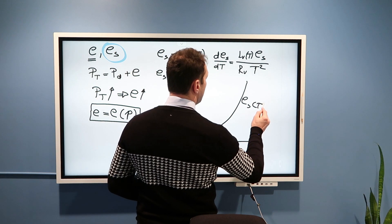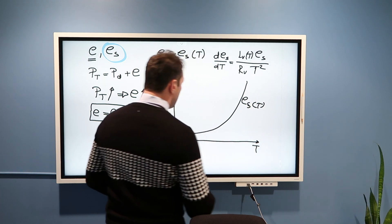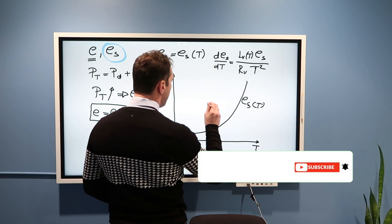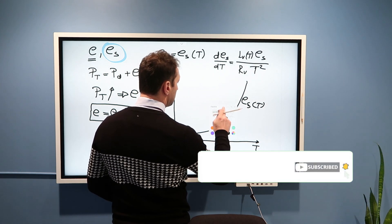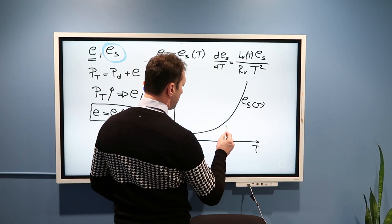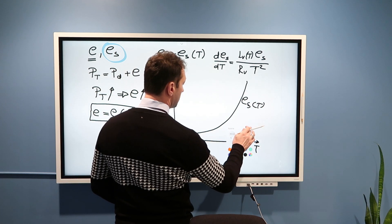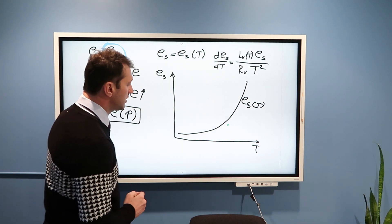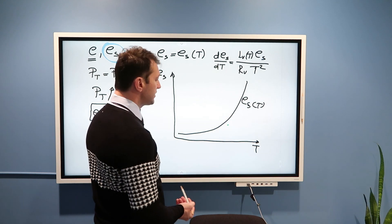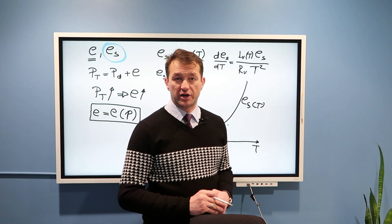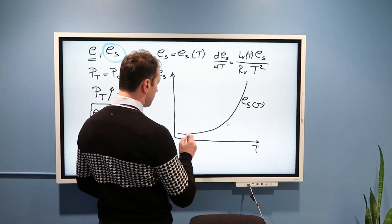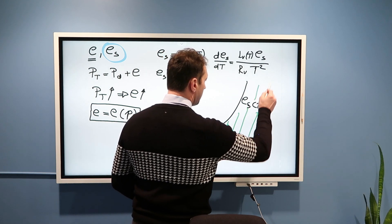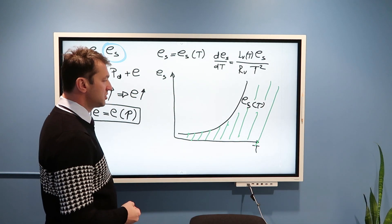So, this is ES as a function of T. Which means, if for a given temperature, we have this amount of vapor pressure, we would say that air or parcel of air is unsaturated with water vapor. Which means, this whole region over here is the region of below saturation, unsaturated air.